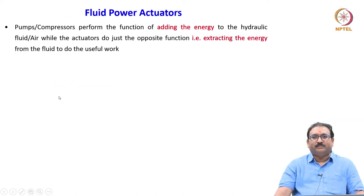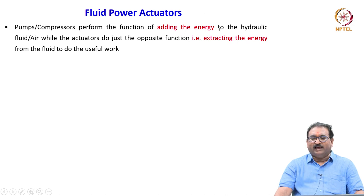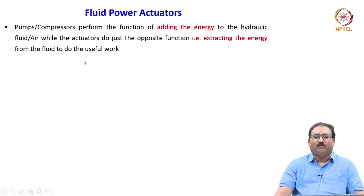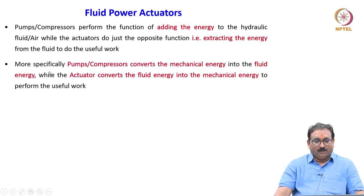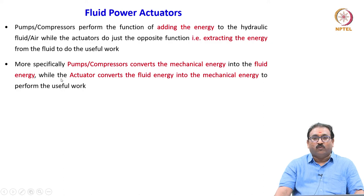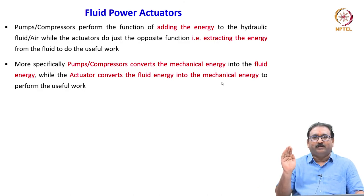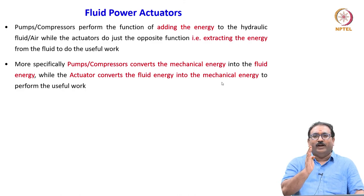The fluid power actuators work as follows: pumps and compressors perform the function of adding energy to the hydraulic fluid or air, while the actuator does just the opposite — extracting the energy from the fluid to do useful work. More specifically, the pump or compressor converts the mechanical energy received from the electric motor into fluid energy, while the actuator converts the fluid energy received from the pump or compressor into mechanical energy to perform the useful task.